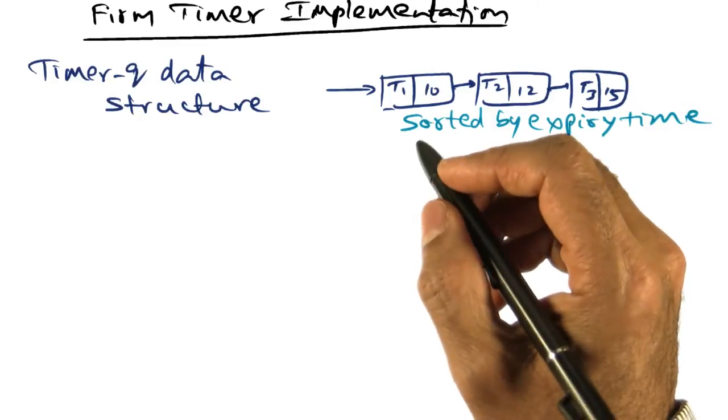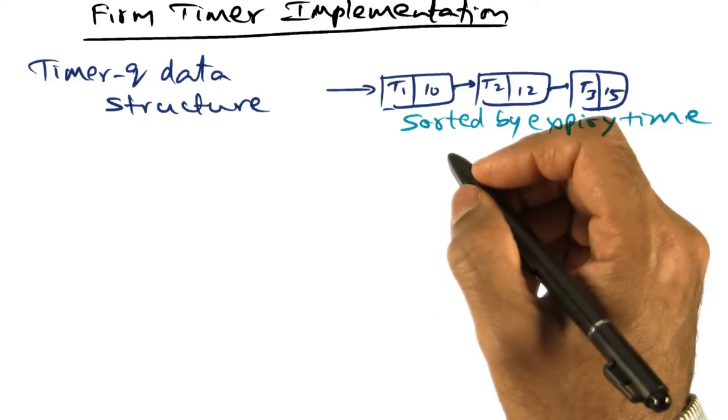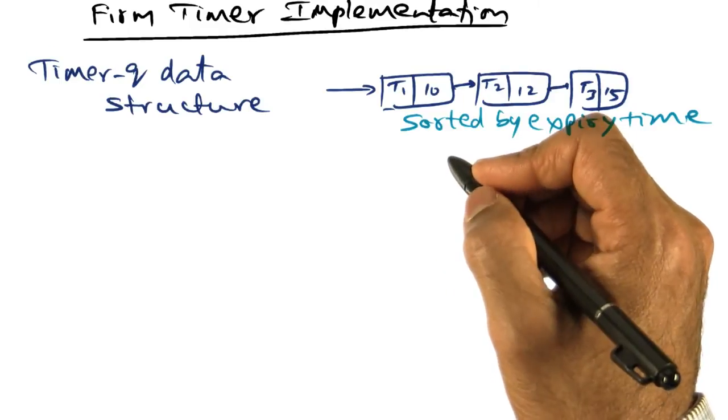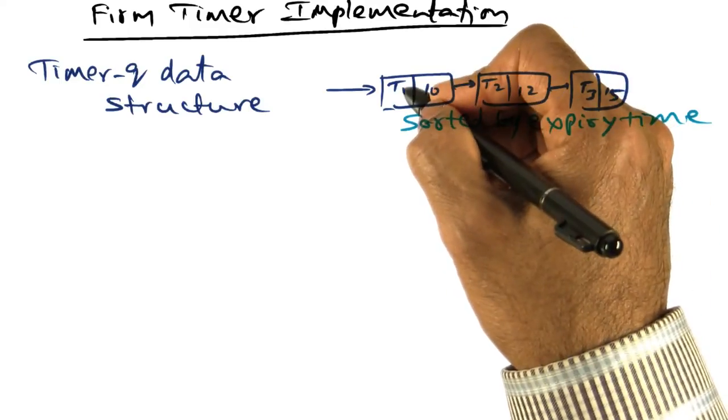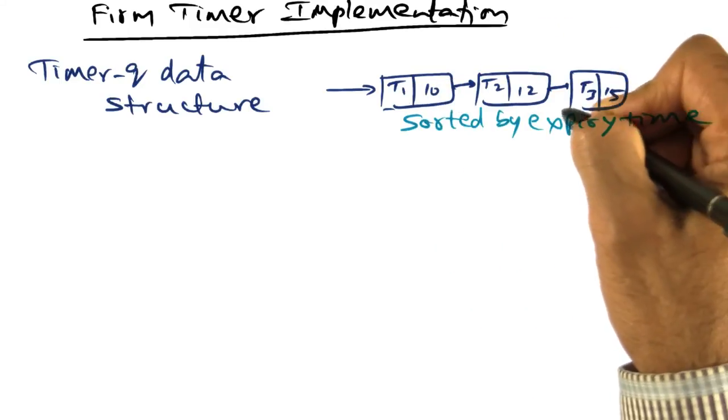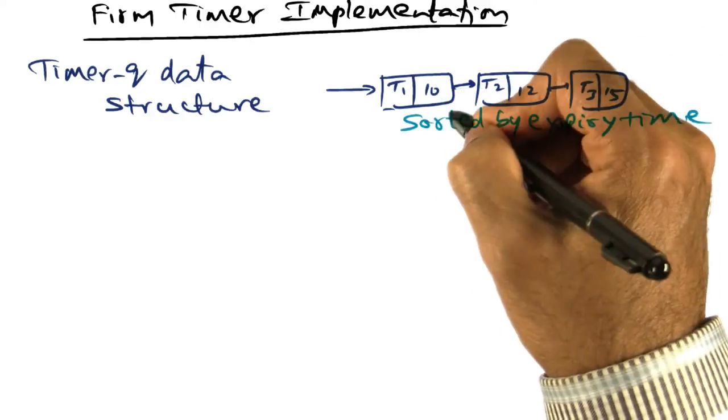As you know in Linux, they use the term task to signify a schedulable entity. So we're using T1, T2, T3 to mean tasks which are schedulable entities.